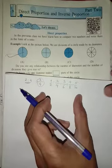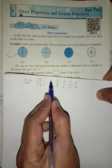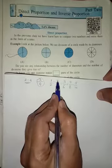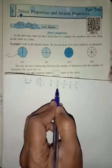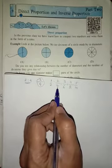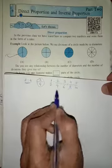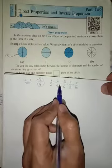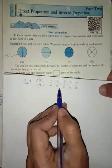So what do we mean? Direct proportion. If we increase the denominator, then the denominator is also changed or increased. Then we say it is direct proportion.